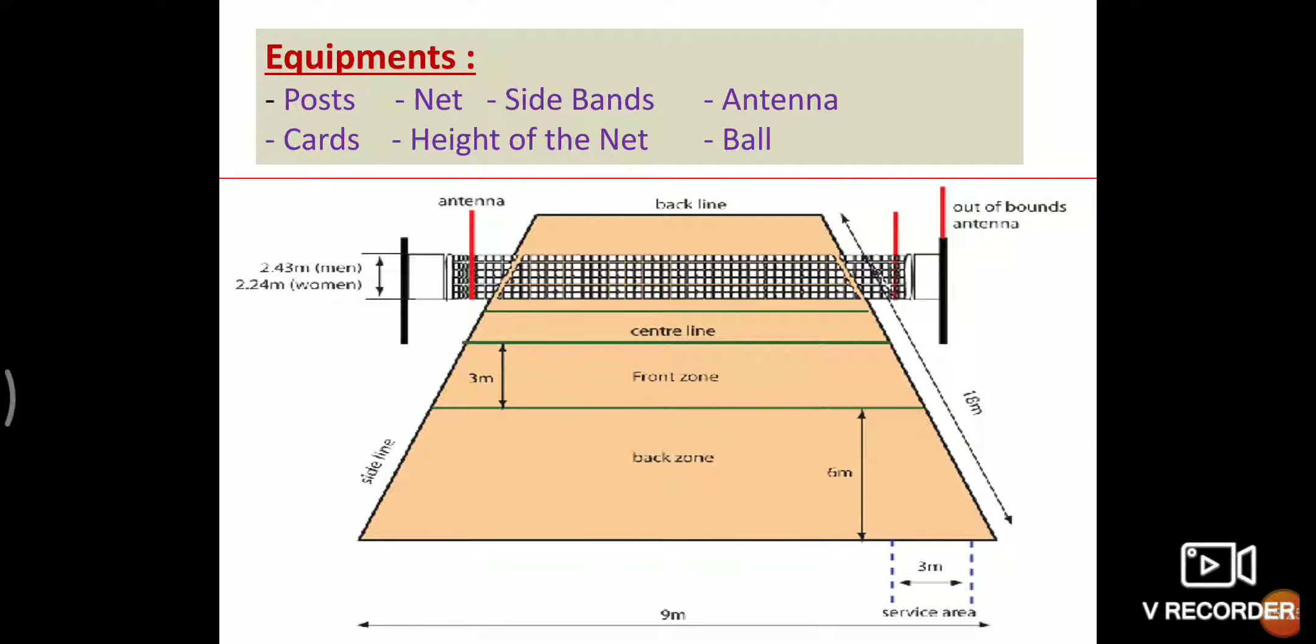Equipment: First, posts. The posts supporting the net are placed at a distance of 1 meter outside the sideline. They are 2.55 meters high, round and smooth.